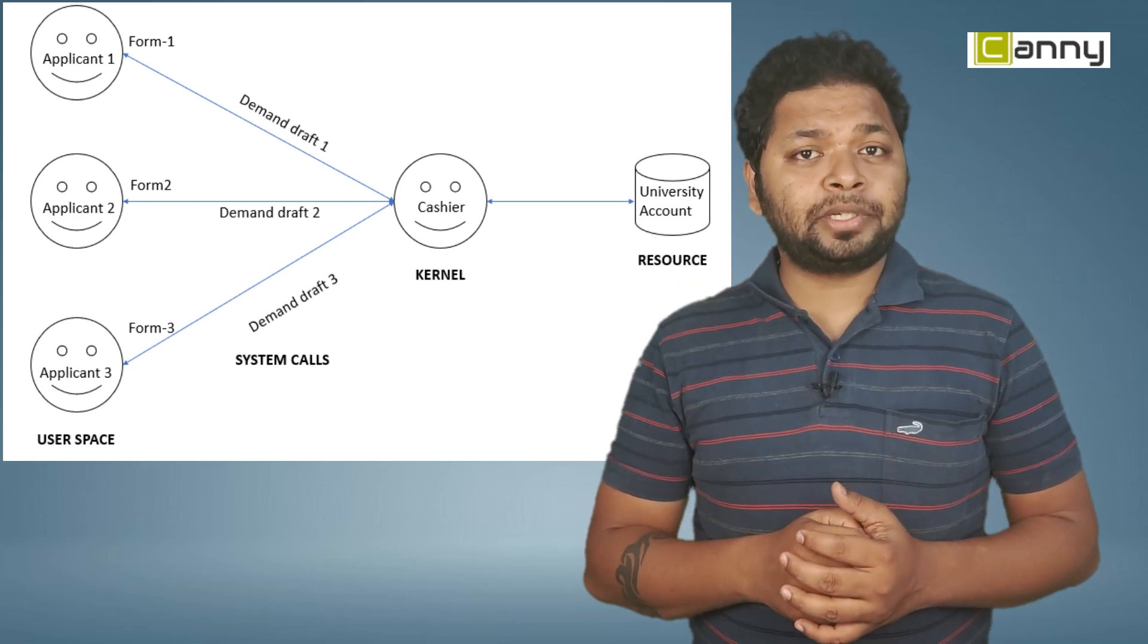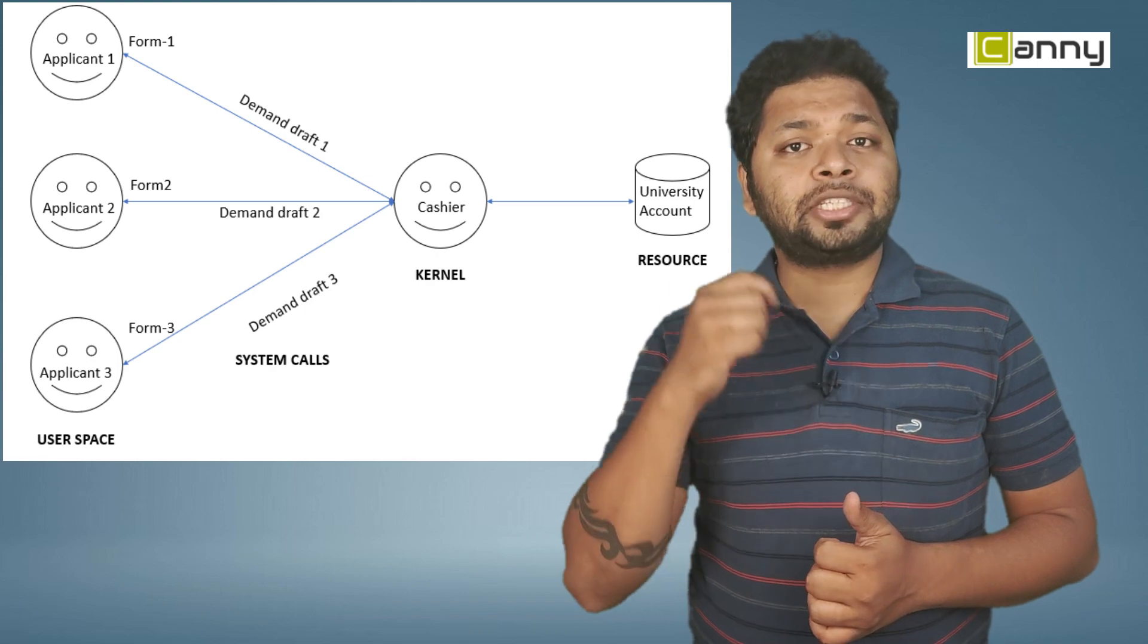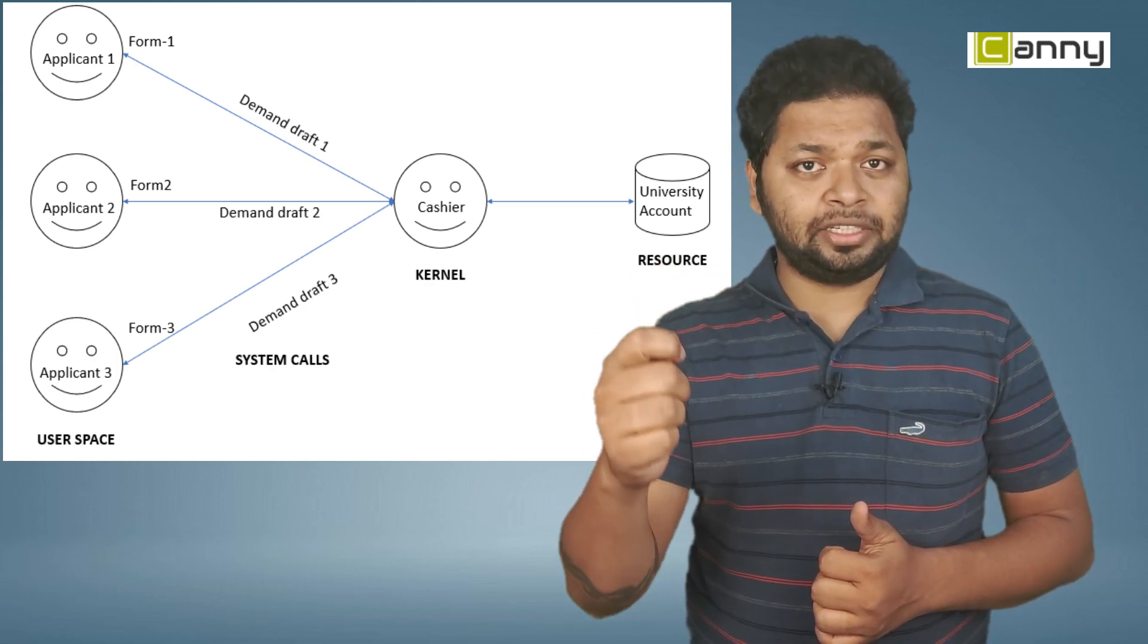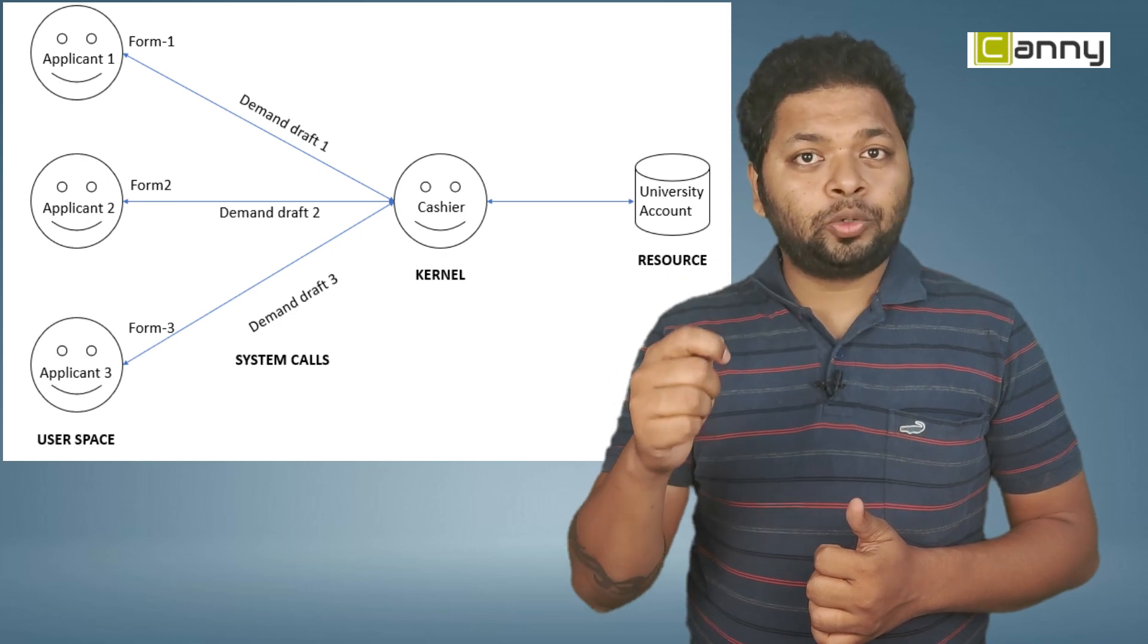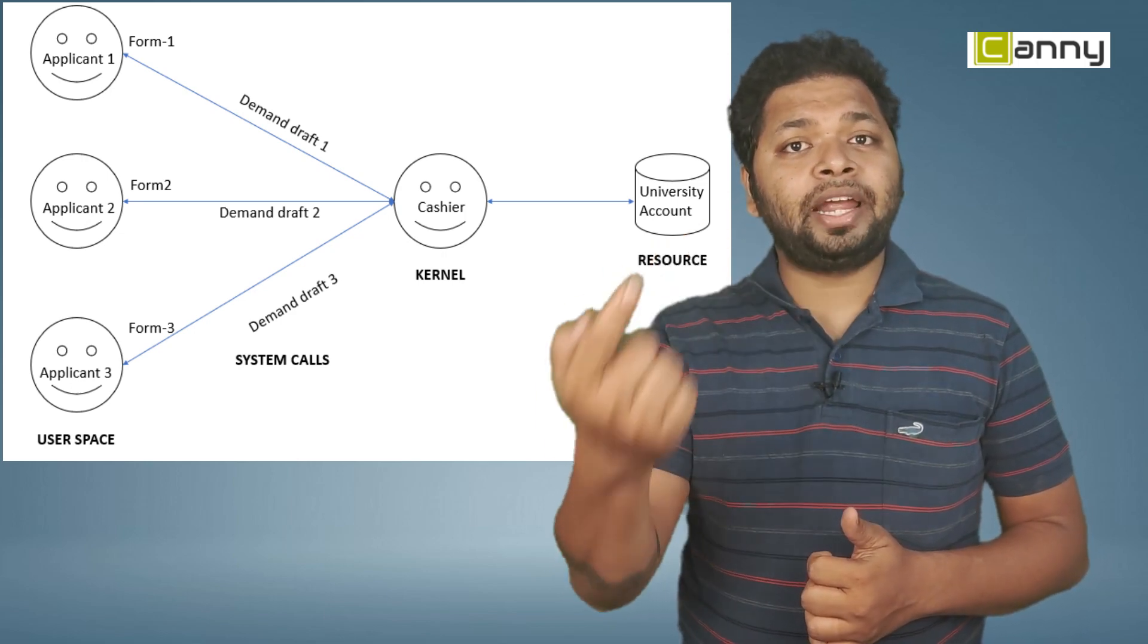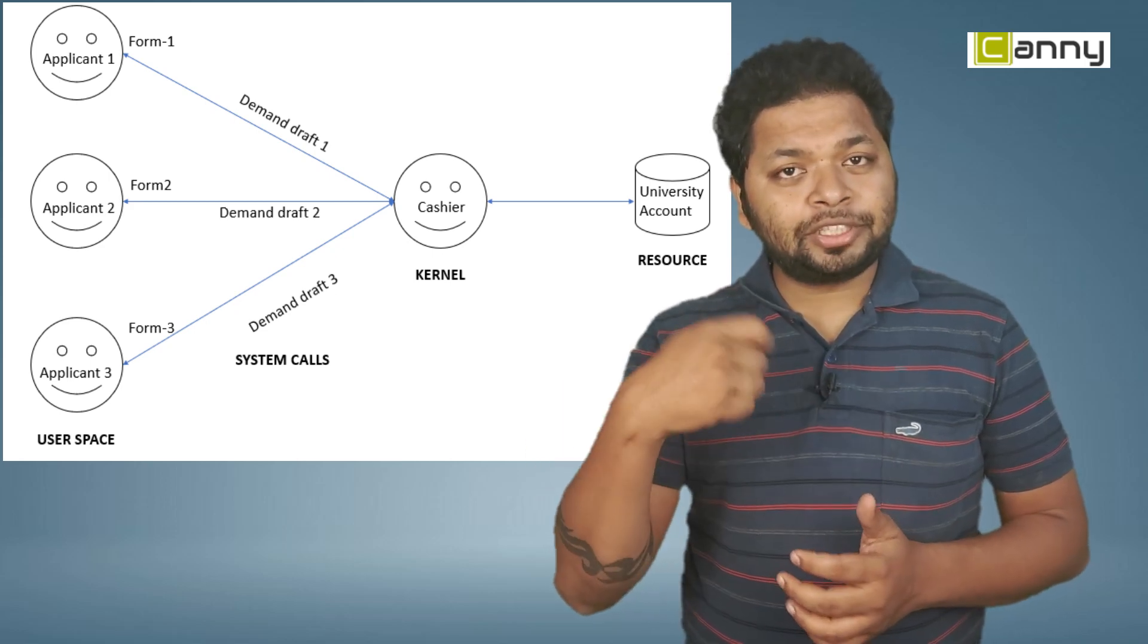Now, for example, one person fills up that form and fills up that demand draft, and then he goes to a bank and meets a cashier or bank manager who takes that demand draft and then deducts the amount from his account and deposits it into the university's account.